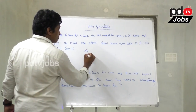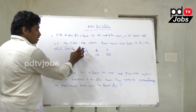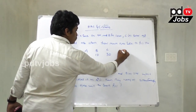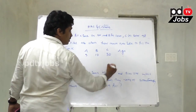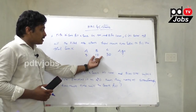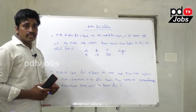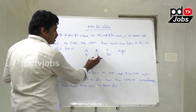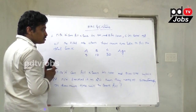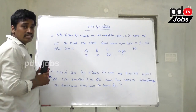Pipe A fills in 5 hours, B in 10 hours, C in 30 hours. LCM of 5, 10, and 30 is 30. So total tank capacity is taken as 30 liters.